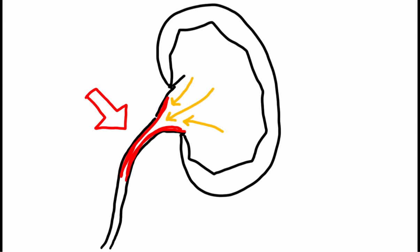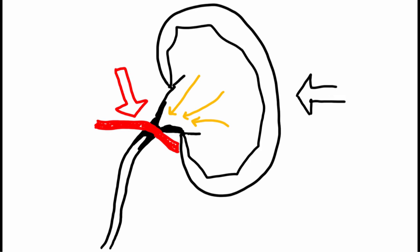Sometimes it doesn't form properly and it's too narrow. Other times, a nearby blood vessel presses on it and narrows it from the outside. Either way, the urine drains slowly and causes a ureteropelvic junction obstruction, or UPJO.